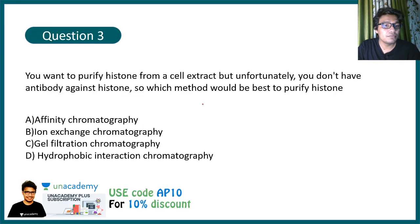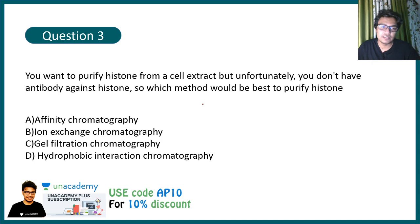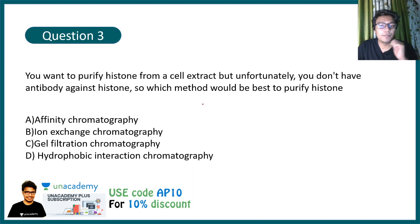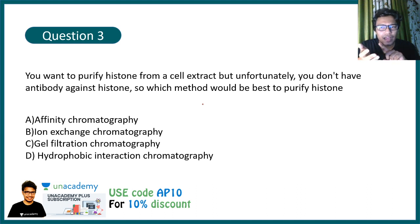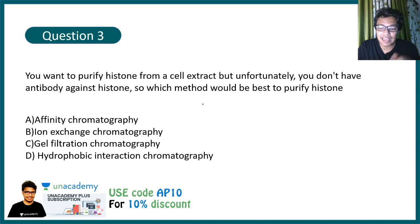Question three: You want to purify histone from a cell extract but you don't have an antibody against histone. Which method could be used? Options are: affinity chromatography, ion exchange chromatography, gel filtration chromatography, and hydrophobic interaction chromatography. Without an antibody, affinity purification is not possible. Histones are positively charged proteins, so consider which technique exploits charge — let me know in the comments.